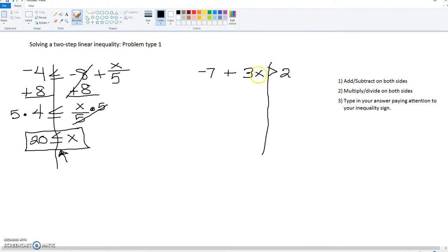But we need to isolate the x. So that means we're going to either add or subtract, and in this case, we're going to add 7 to both sides. So that cancels here, which is what we wanted. Add 7 over here, so 2 plus 7 is 9. We're going to bring down that inequality sign.